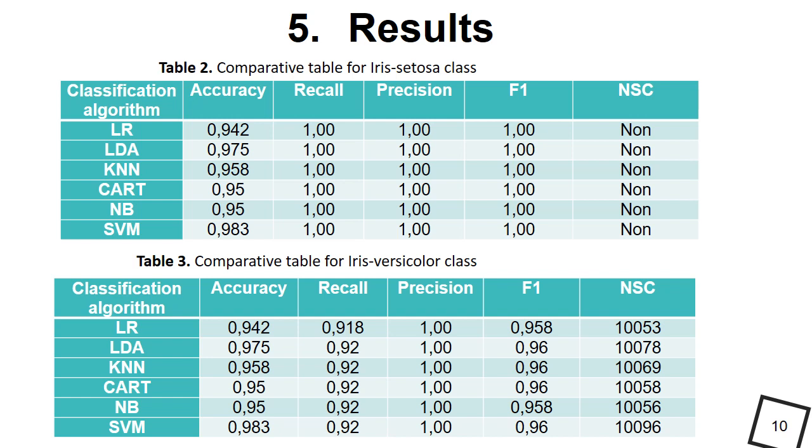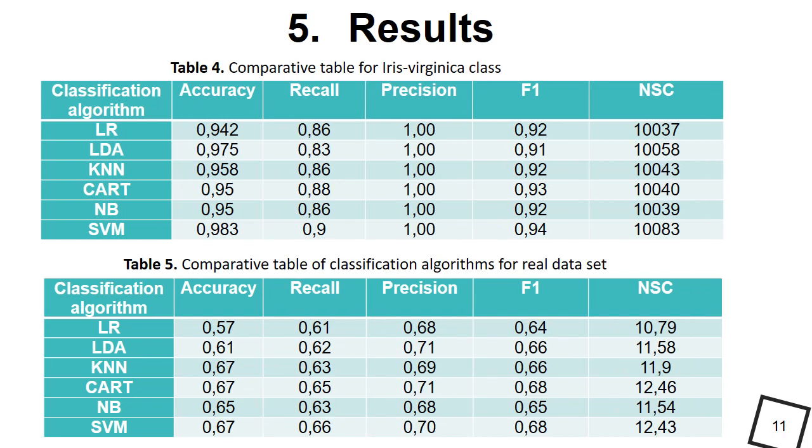The obtained research results are presented in Tables 2-4. Since the experiments were performed for a well-known dataset which was well-balanced and tested, the additional experiments were performed for a two-class classification of a real dataset with 15,758 copies. The results obtained are summarized in Table 5.